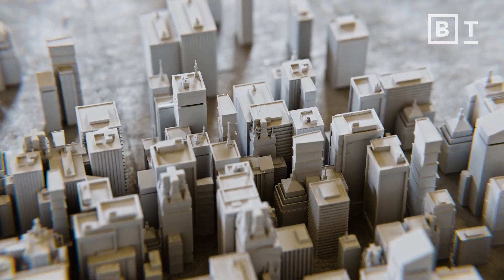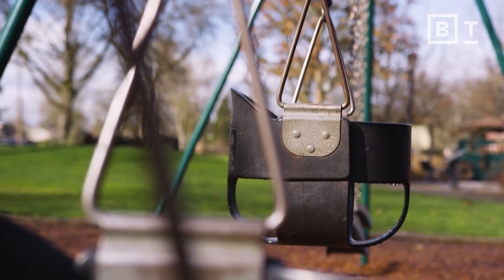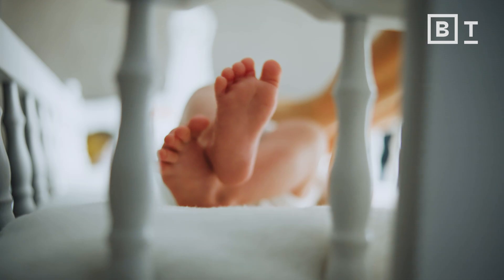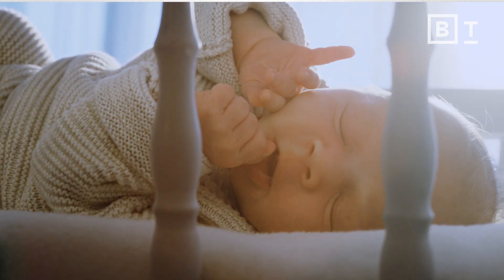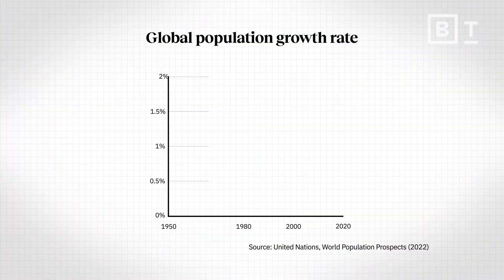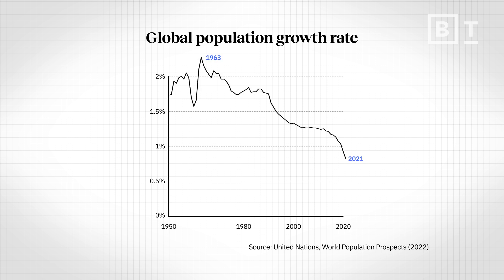I think there were two key things that the overpopulation argument got wrong. The first is that they underestimated the impact of the demographic transition. They assumed that world population would continue to grow exponentially, and it hasn't. While the global population is still growing, it's growing at a much slower rate. Global population growth rates peaked decades ago and have halved since then.